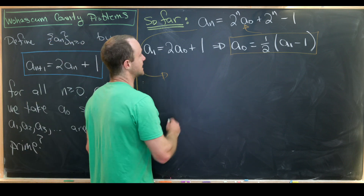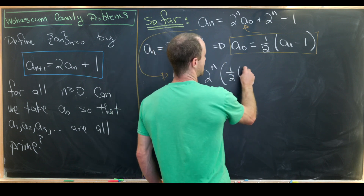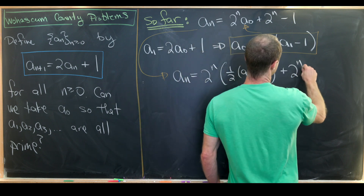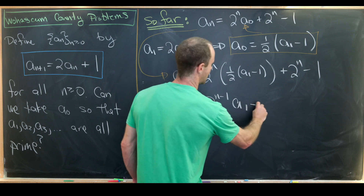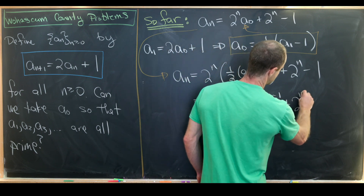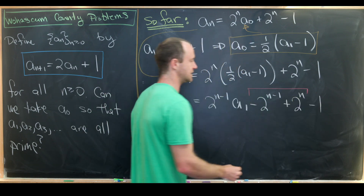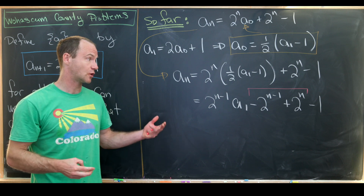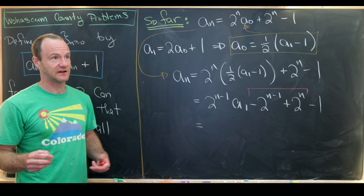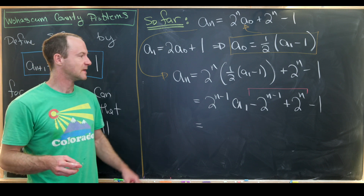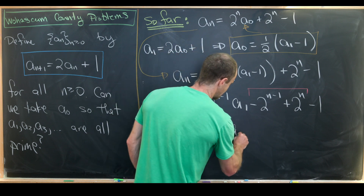Substituting, a_n equals 2^n times [(1/2)·a_1 - 1] plus 2^n minus 1, which simplifies to 2^{n-1}·a_1 minus 2^n plus 2^{n-1}. Notice we have consecutive powers of two being subtracted: 2^n minus 2^{n-1} equals 2^{n-1}. So we're left with a_n equals 2^{n-1}·a_1 plus (2^{n-1} - 1).